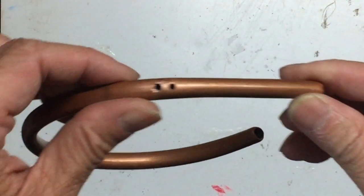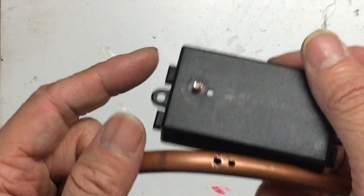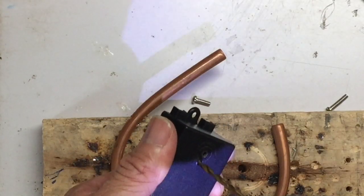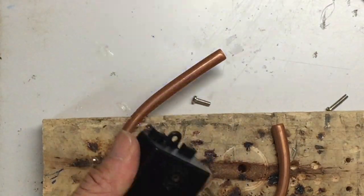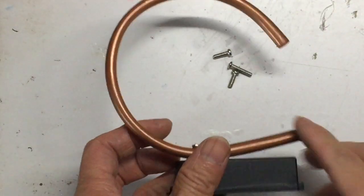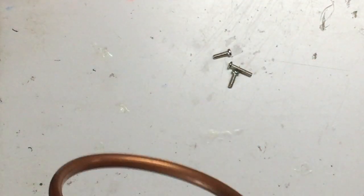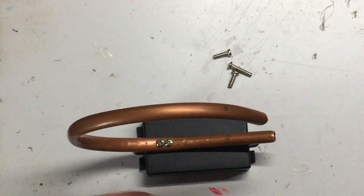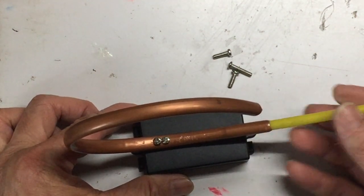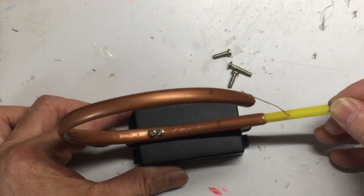Drill two 3mm holes for securing the bigger pipe onto the stand. You need to drill the same holes in the stand too. Now let's test to see if the drinking straw can still push in. It seems to work quite smooth.